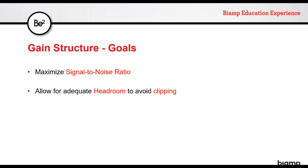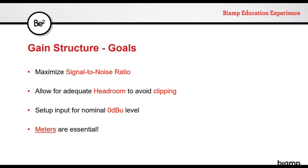Looking left to right — whether mic level or line level inputs — we want to maintain the center section as close to unity as possible. There will be some level controls in there, but we want to maximize signal-to-noise ratio and allow for adequate headroom. We don't want to clip our inputs. We generally want to look for a nominal 0 dBU level on our inputs, averaging around 0 dBU in our meters. Meters are essential — place them throughout the processing file: on the front end to watch inputs and at strategic points along the signal path.